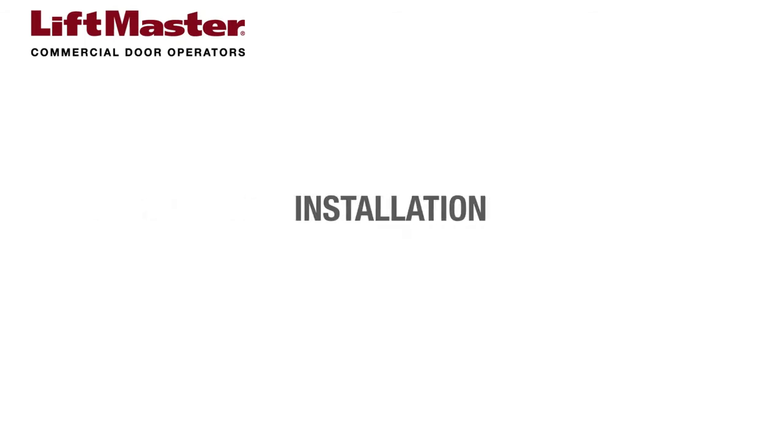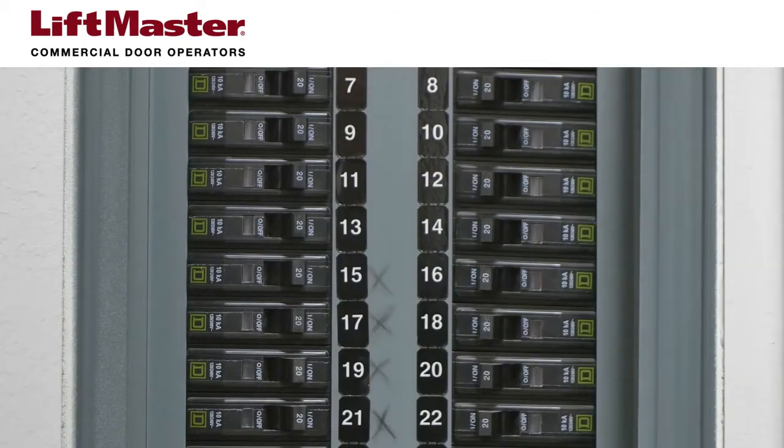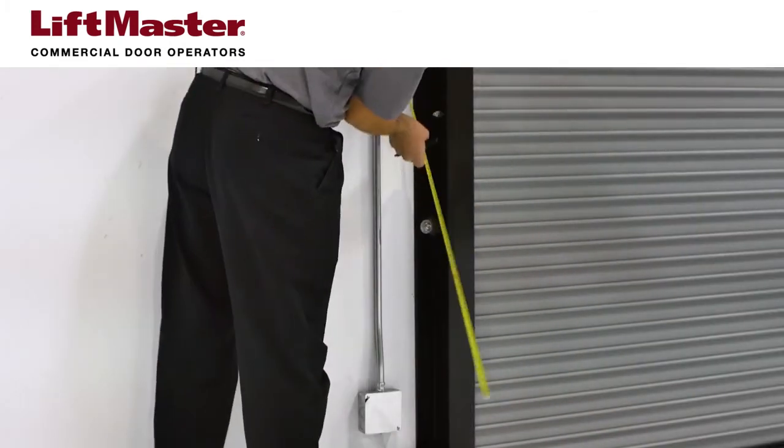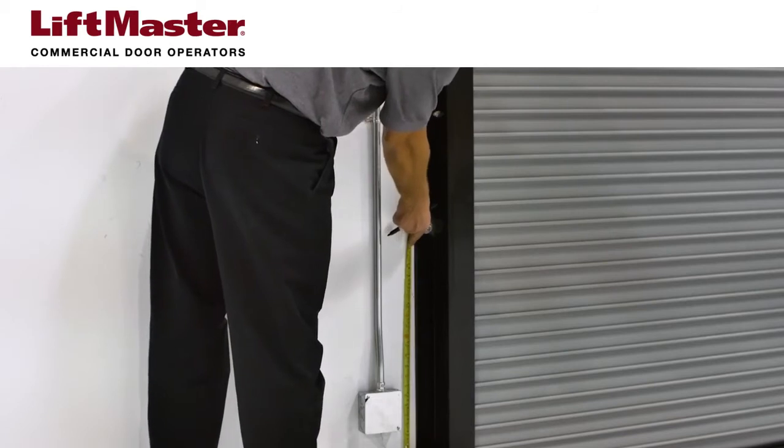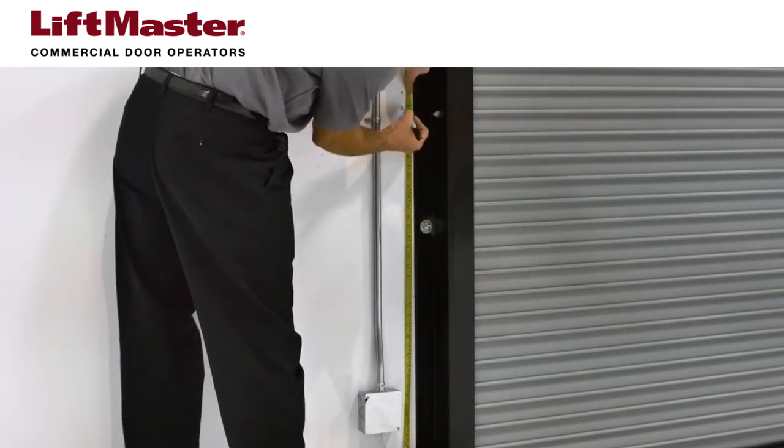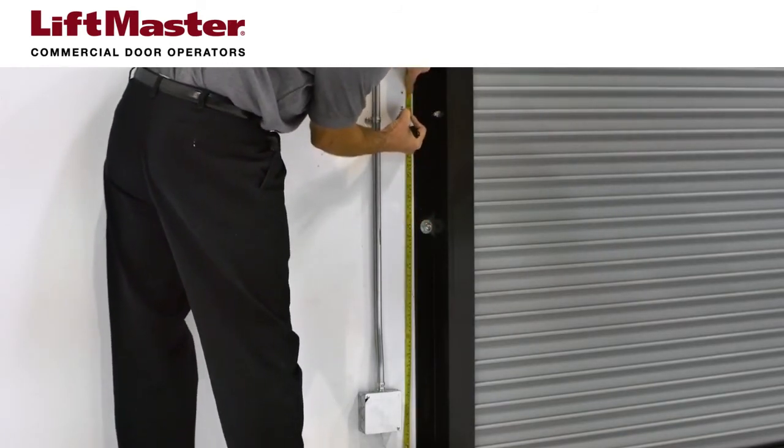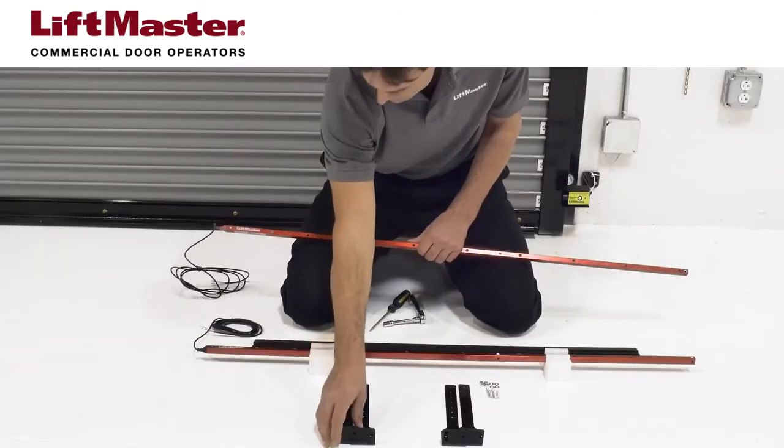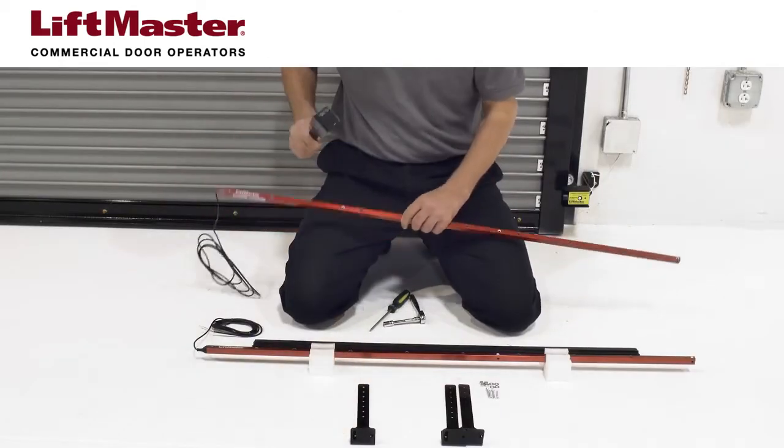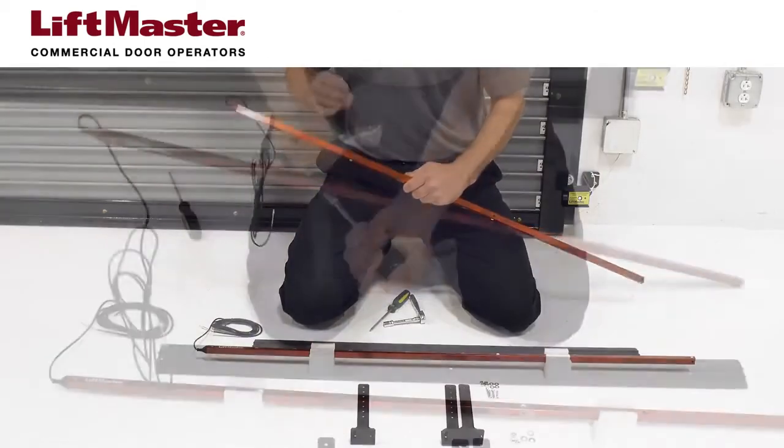Installation. Begin by disconnecting power to the operator. Light curtains must be installed a minimum distance of 12 inches above the primary photoelectric sensors. We've already measured and pre-drilled mounting holes using wall anchors as appropriate.